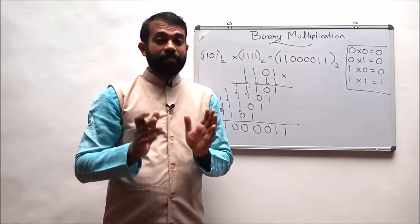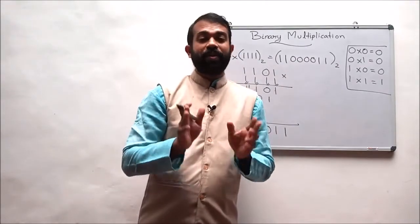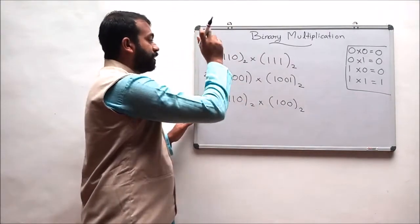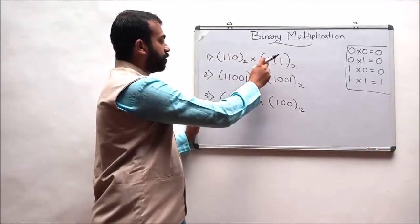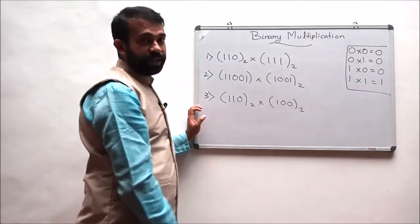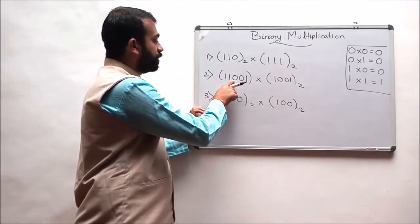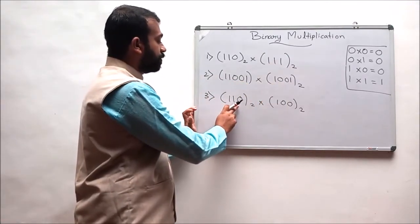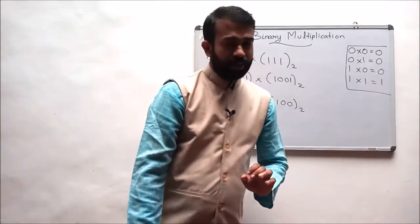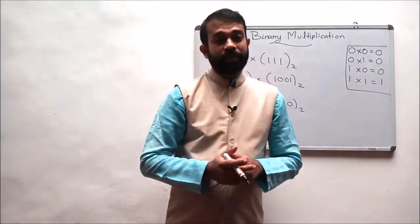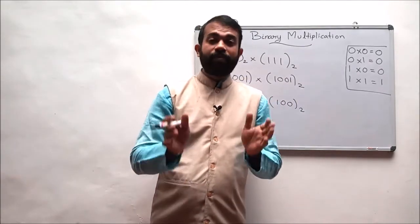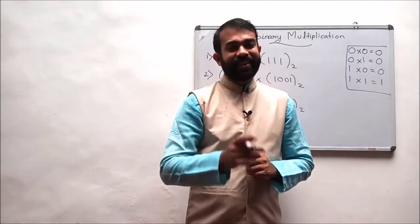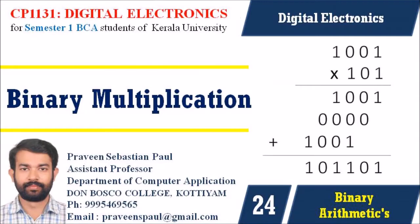This is how we perform the binary multiplication operation. Dear students, perform these binary operations. The first question is: multiply 110001 with 1001. The second question is: multiply 1100 with 100. In the upcoming lecture we will discuss how to perform the binary floating point multiplication operation. See you soon — until then, goodbye. Thank you and all the best.